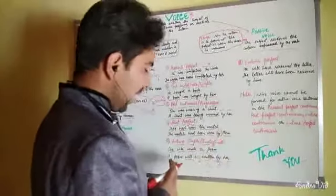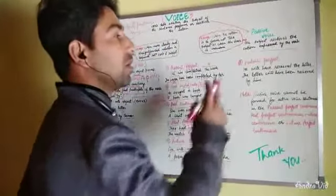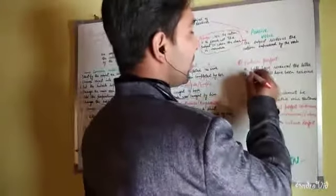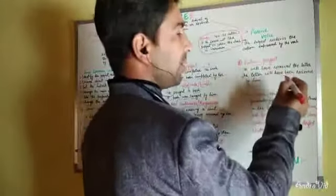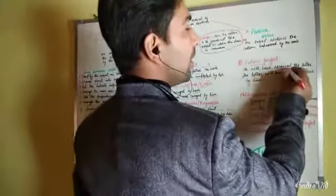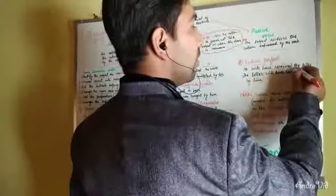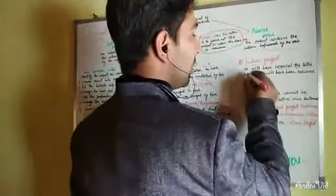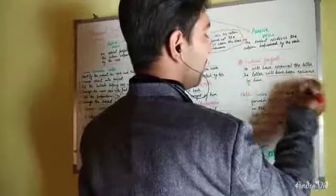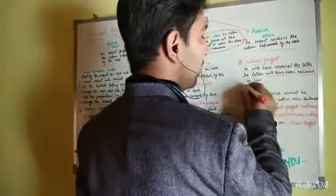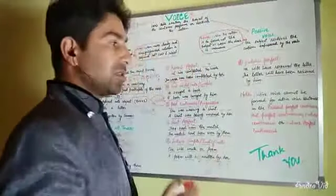Future continuous is also skipped. Now future perfect: subject + 'will have' as helping verb + V3 + object. In passive, the object comes first, followed by the helping verb 'will have been,' then V3, then preposition 'by,' then the subject. For example: 'She will have written a letter' becomes 'A letter will have been written by her.'